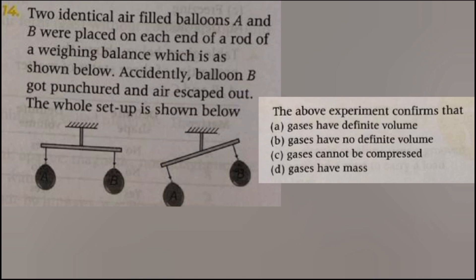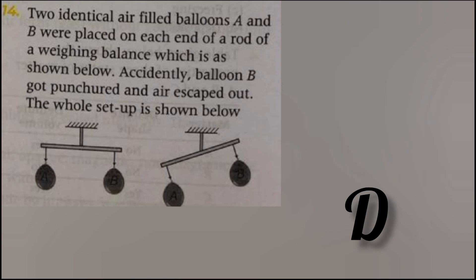Two identical air-filled balloons A and B were placed on each end of the rod of a weighing balance which was shown below. Accidentally, balloon B got punctured and air escaped out. The whole setup is shown below. The answer is D, gases have mass. The setup confirms that gas has mass. When balloon B got punctured, the air came out. As a result, the weight of balloon B decreased and an imbalance is observed.